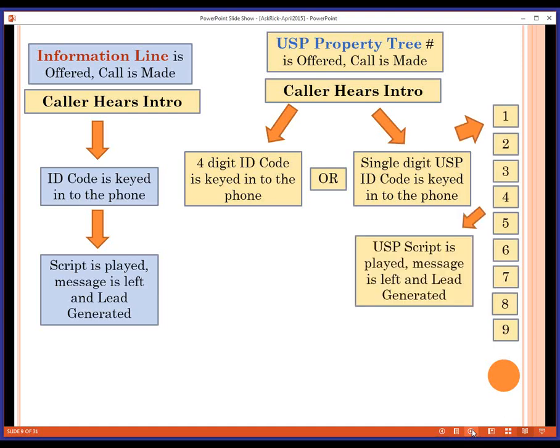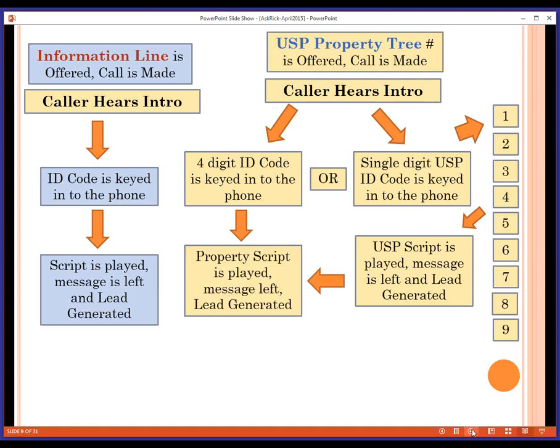Let's say the prospect decides to press digit number two on their phone. Behind digit number two you've offered to give them information about your guaranteed sale program. They hear that, we tell them how to get the report we've offered to send them, and then we tell them to kick in the four-digit ID code that goes with the property. So they get to do both. The whole process is very branded, and we call it a tree because they can continue to go through property after property if they choose.